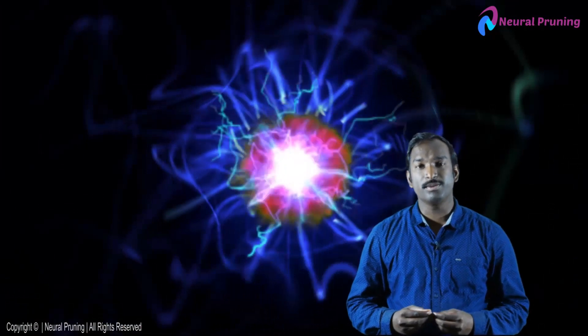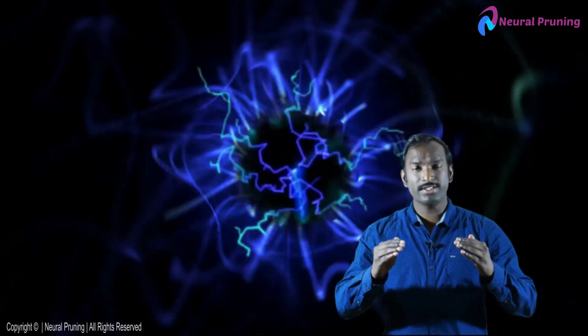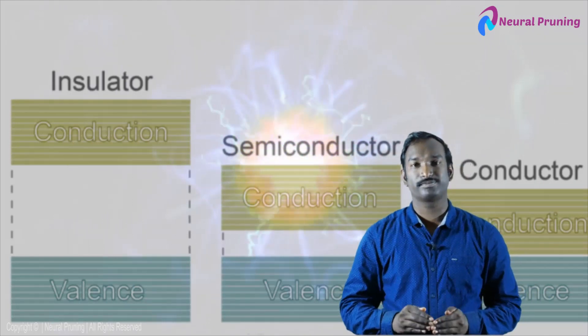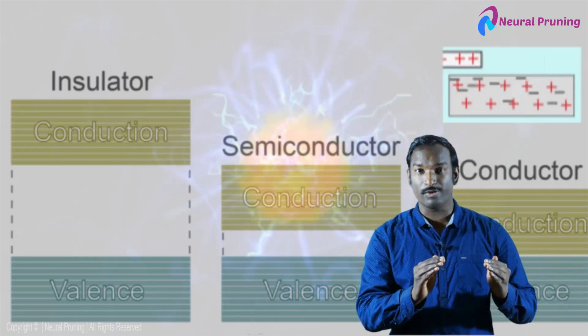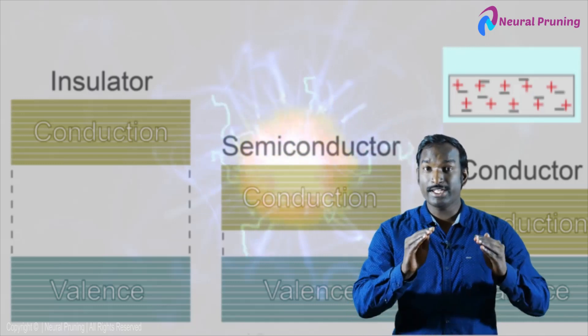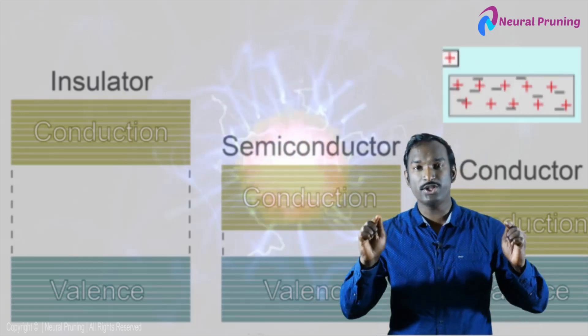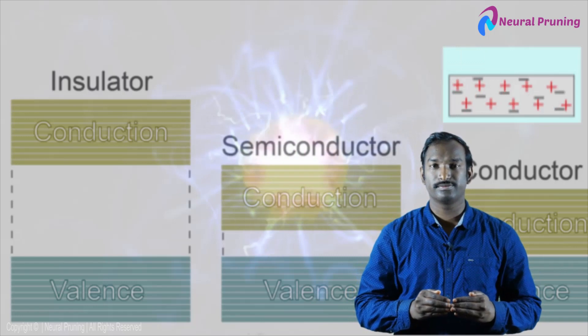Now we'll discuss about electricity, because almost all instruments are working on the basis of electricity. Materials are classified into three groups on the basis of conductivity: conductors, insulators, and semiconductors. Conductors conduct electricity due to the presence of free electrons — electrons are the charge carriers. They move from one end to the other end when we supply a potential difference across the ends of the conductor. All metals are examples.